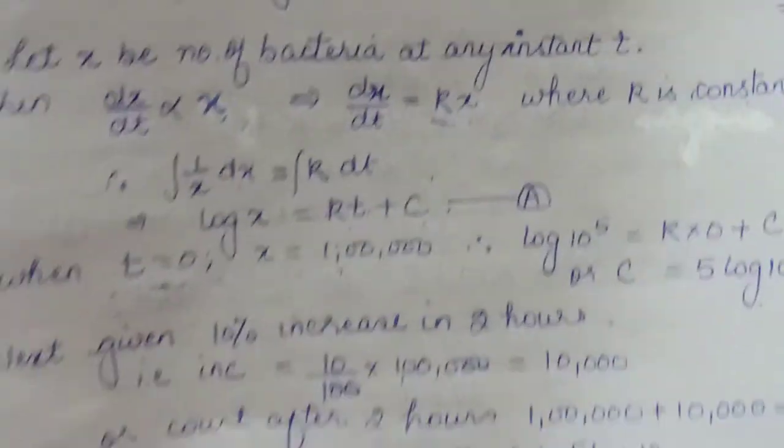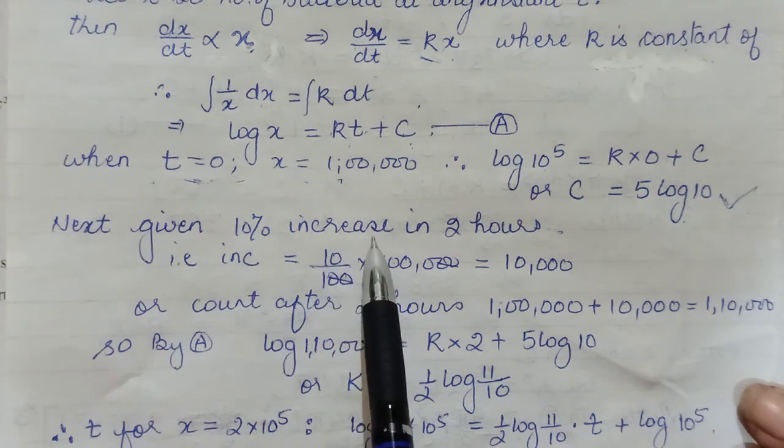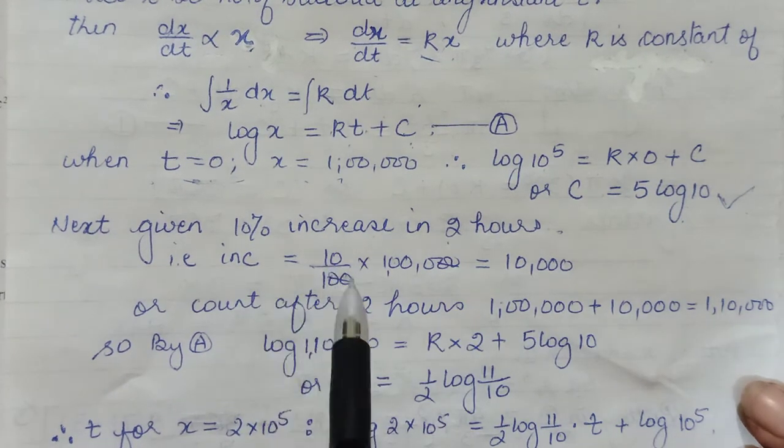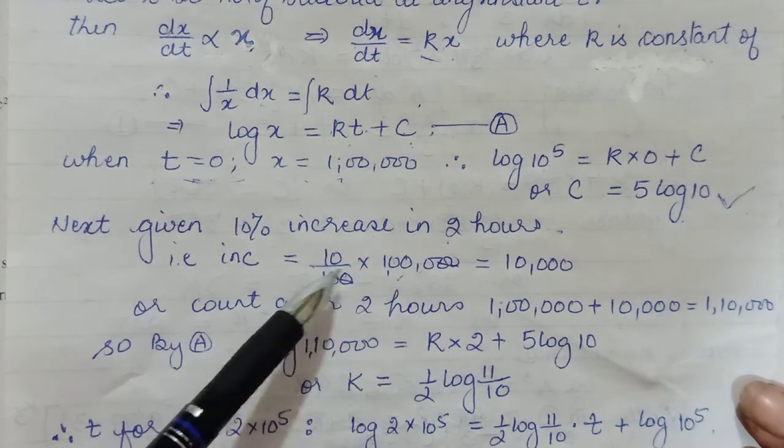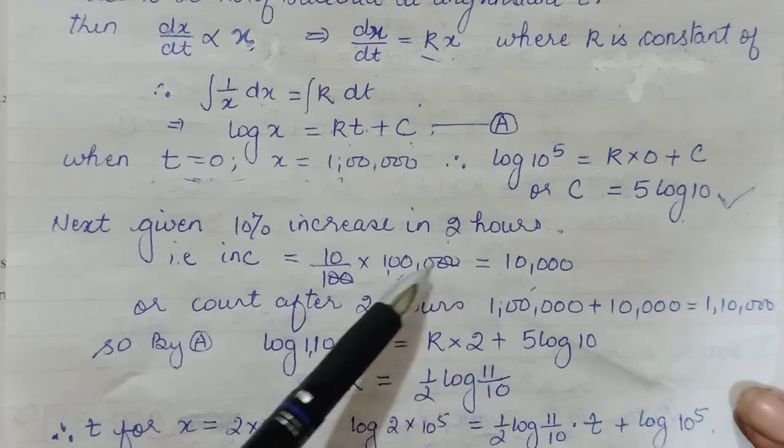So for that, more facts were given to us. We were told that 10% increase is shown in 2 hours. So initially we had 1 lakh in count. So 1 lakh ka 10%. 10% of 1 lakh means 10,000 increase.